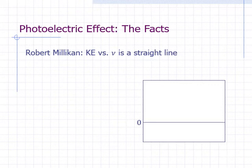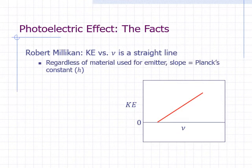Millikan found that the plot of the maximum kinetic energy of photoelectrons versus frequency is a straight line. With kinetic energy on the y-axis and frequency on the x-axis, here's what a plot of experimental data would look like. Regardless of the material used for the emitter, the slope is always the same.